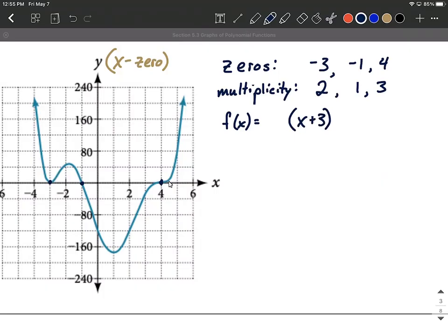We said multiplicity of two, so I'm going to use that in the exponent. Negative one was our next zero, so x plus one, that's going to be raised to the first power for its multiplicity. And finally four, x minus four, and we said that was going to be raised to the third power.